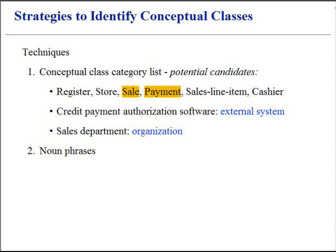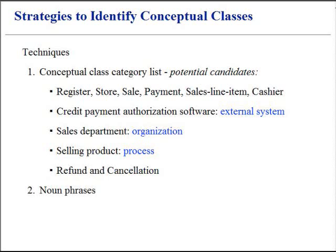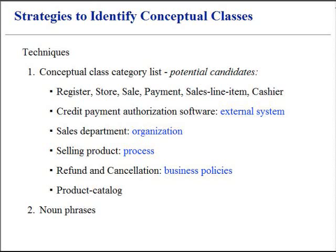Sale or Payment are also events in the system. Selling Product is a process. Refund and Cancellation are business policies. Product Catalog itemizes the products. Receipt is a record of the sale.